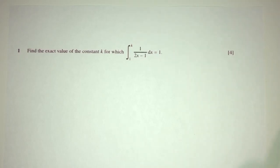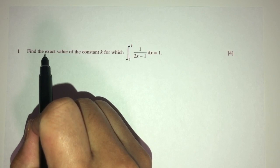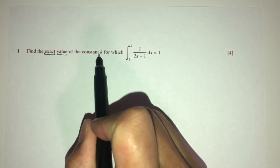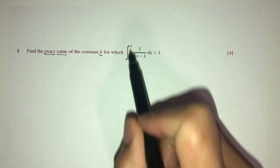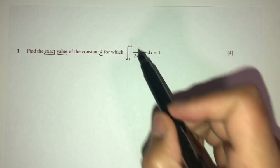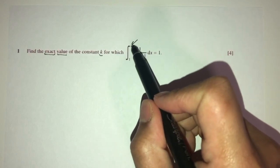We have question number 1. Find the exact value of the constant k for which we have this integral is 1. k is right here. We have to find the value of k.